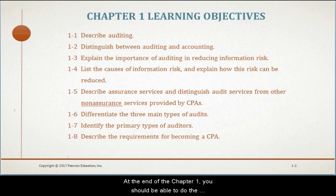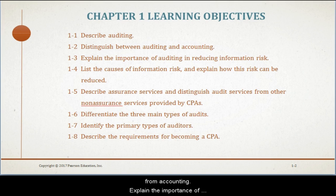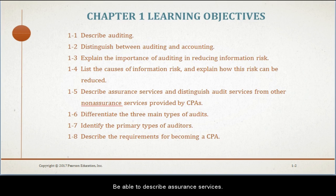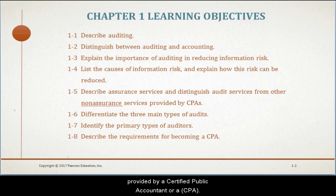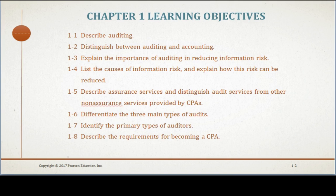At the end of Chapter 1, you should be able to do the following: describe what audit means; distinguish audit from accounting; explain the importance of auditing in reducing information risk; list the causes of information risk and explain how it can be reduced; describe assurance services; distinguish audit from other non-assurance services provided by a CPA; differentiate the three main types of audits; identify the primary types of auditors; and describe the requirements for becoming a certified public accountant.